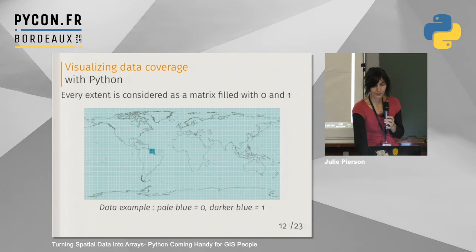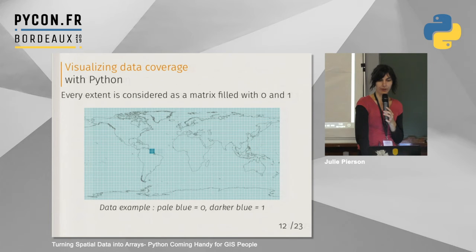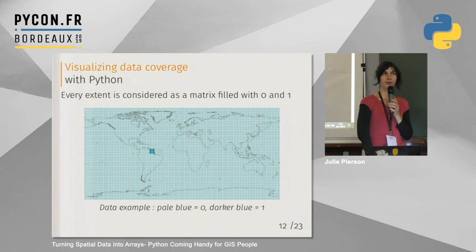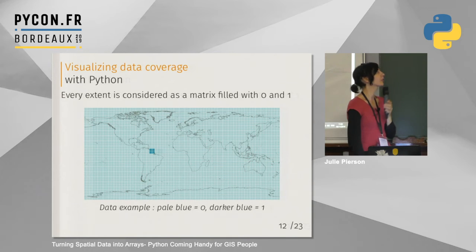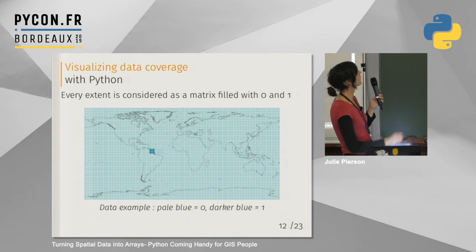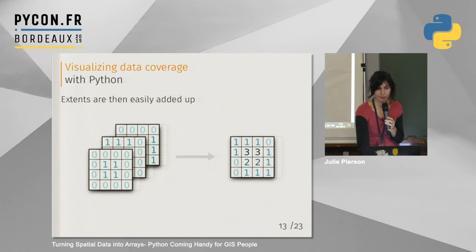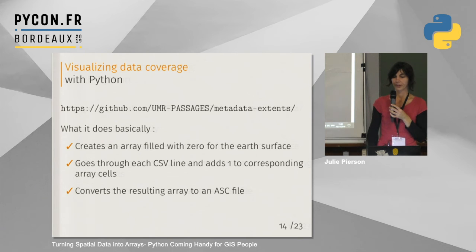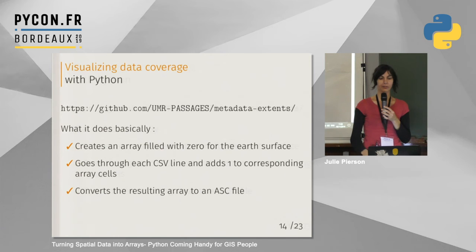So I looked at Python, which is quite widely used for spatial data. My idea was to consider each extent as an array filled with 0s and 1s. Here you can see an example — this is the whole earth. Light blue is 0 and darker blue is 1. So this is a rectangular extent for French Guiana in South America. You can then easily add up every extent. The scripts are all on GitHub. It's very simple: it first creates an array filled with 0 for the entire earth's surface, goes through each CSV line and adds one to the corresponding array cells, and converts the result into an ASC file, which is raster data that can be read by GIS software.